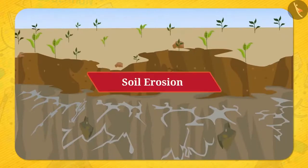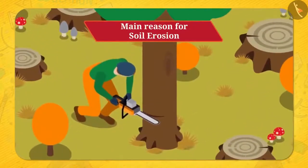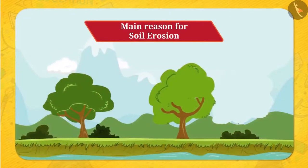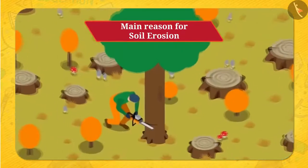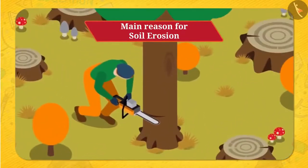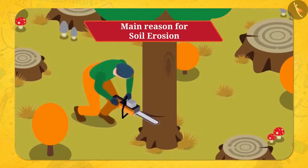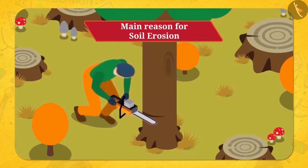Can you tell me how? Let's understand. The roots of the tree hold the soil tightly and protect it from being washed away. And if the trees are cut down, what will happen? There will be no roots to hold the soil tightly and it will get easily washed away, which will lead to soil erosion.